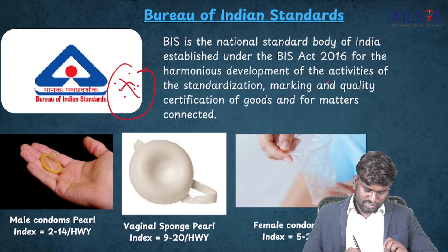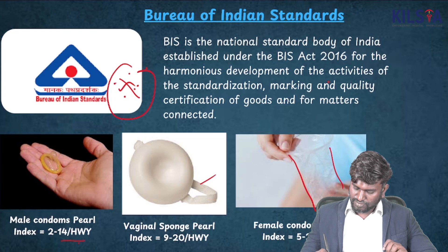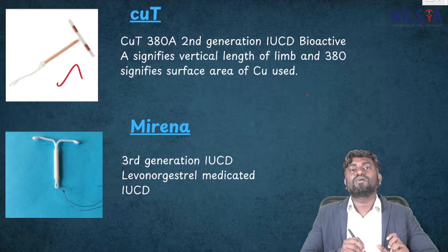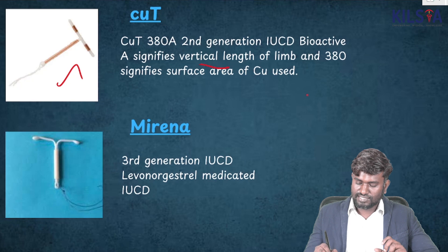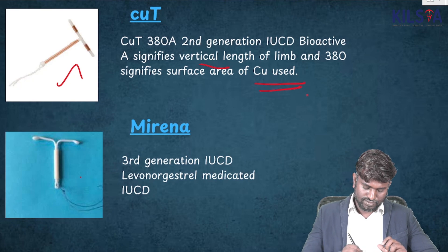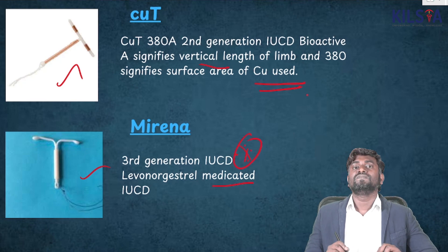Look at male condoms here — Pearl Index of 2 to 14 per 100 women per year. This is going to be called the vaginal sponge, and this is the female condom. This image is going to be Copper-T — a second-generation IUCD. 'A' signifies the vertical length of the limb and '380' signifies the surface area of copper used. This is going to be Mirena — it has levonorgestrel medication. It is a third-generation IUCD.